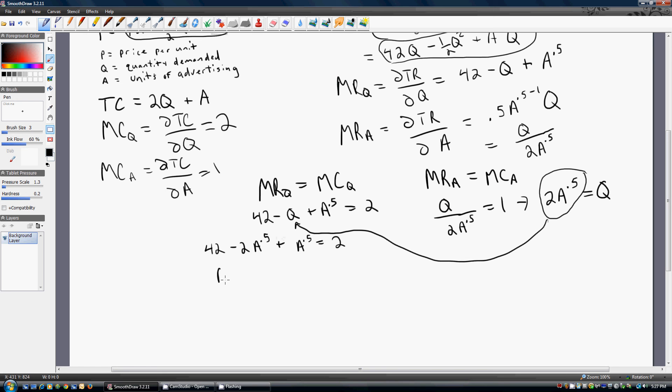Simplifying this up, we get the square root of A equals 40. So if we square both sides, optimal advertising will equal 40 squared or 1,600.